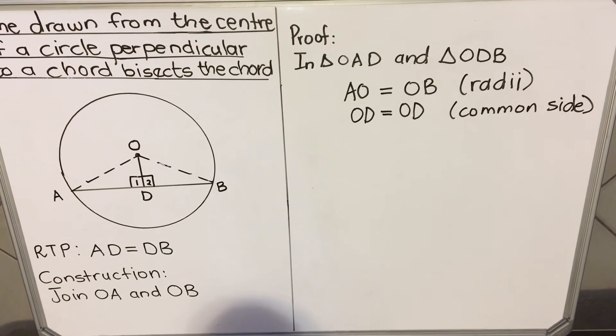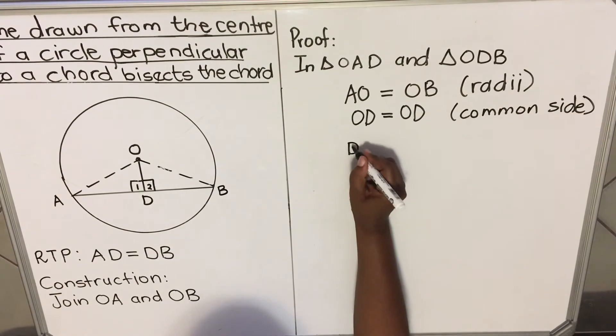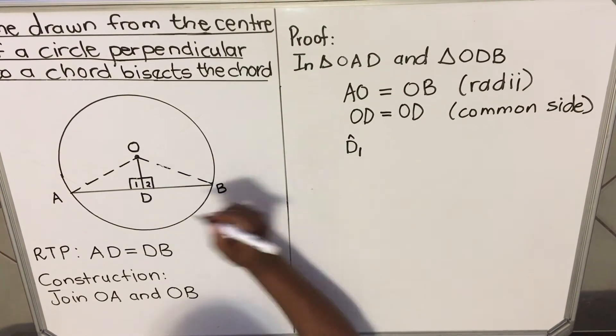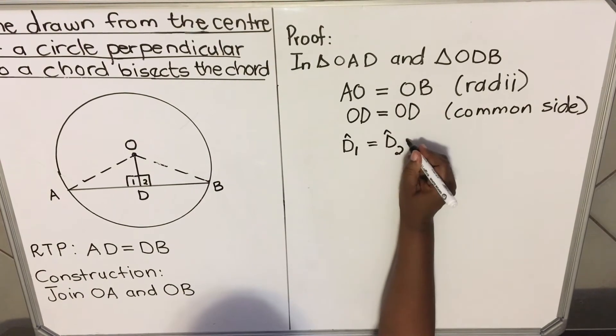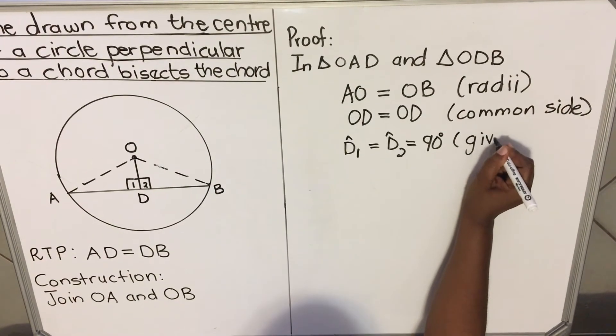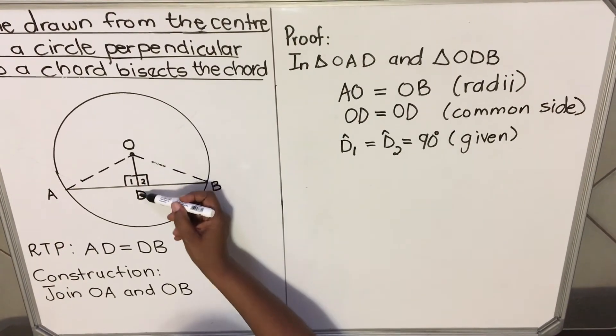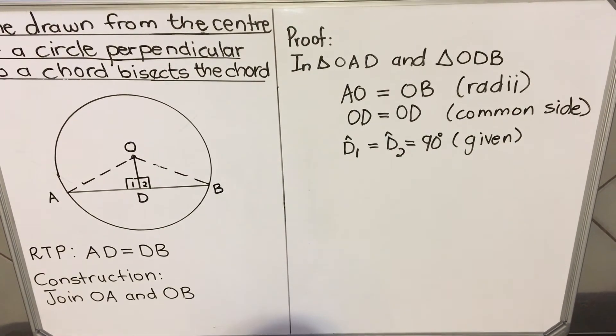Now the third thing that we have, we have angle D1. Angle D1 in that triangle is equal to angle D2 in the other triangle. And both of them, they're equal to 90 degrees. Right? And the reason is given. You remember they told you that the line drawn perpendicular. So when it's perpendicular, it means it's 90 degrees. There are 90 degrees both these angles.